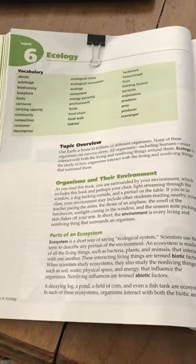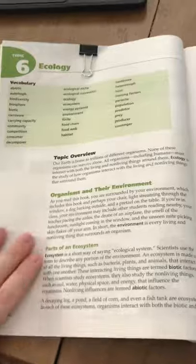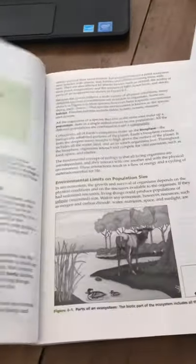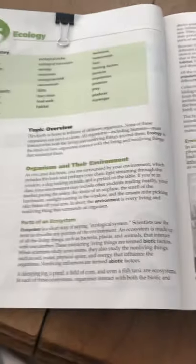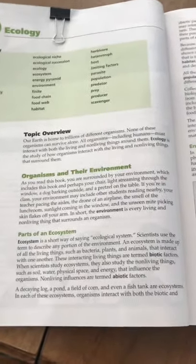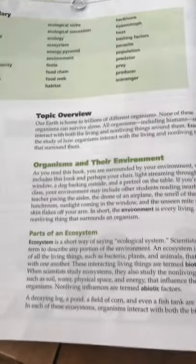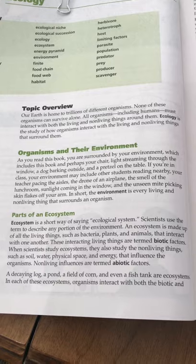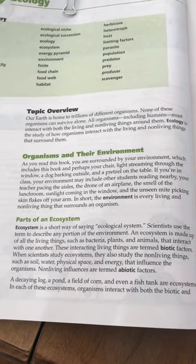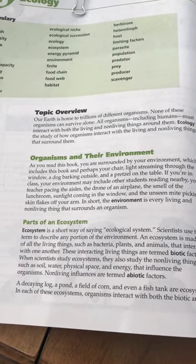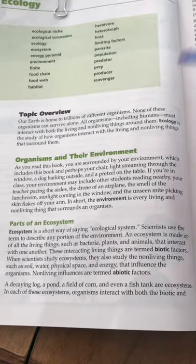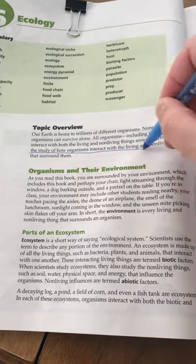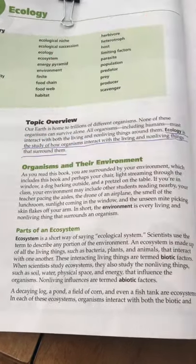I'm going to read out loud Topic 6: Ecology from our Living Environment Review Book. While I read, I'm going to be underlining important information and making some text annotations. Our Earth is home to trillions of different organisms. None of these organisms can survive alone. All organisms, including humans, must interact with both the living and non-living things around them. Ecology is the study of how organisms interact with living and non-living things that surround them.